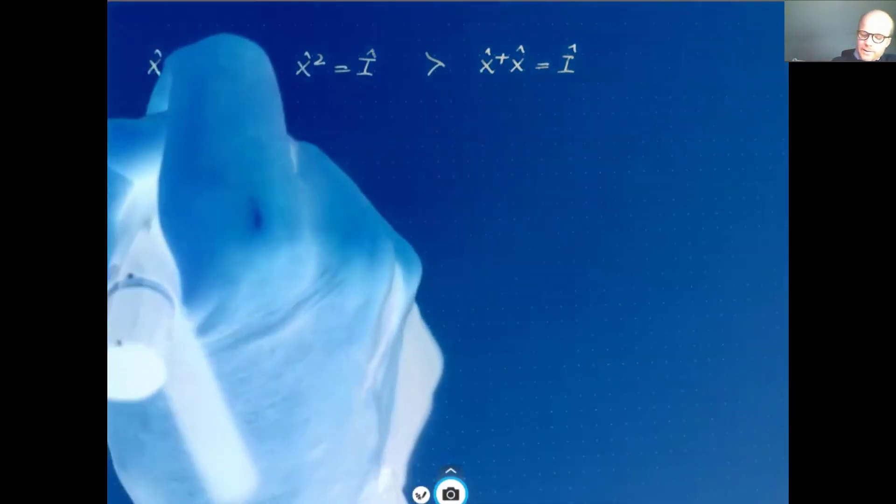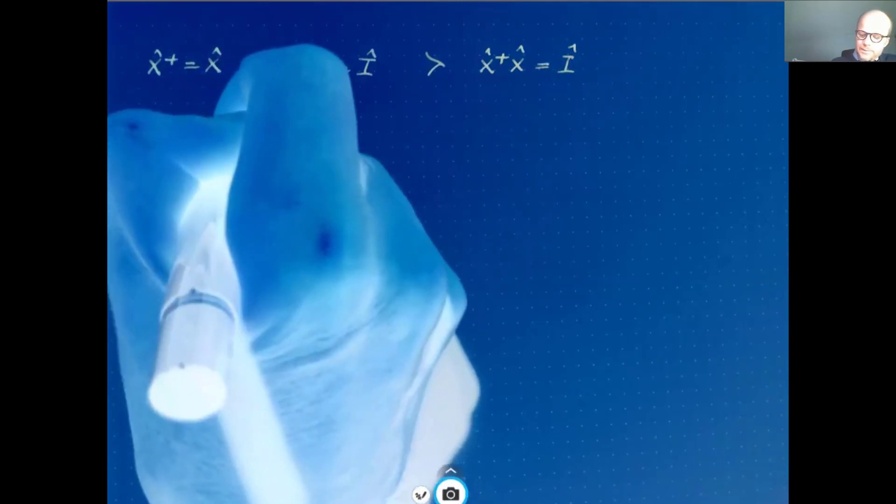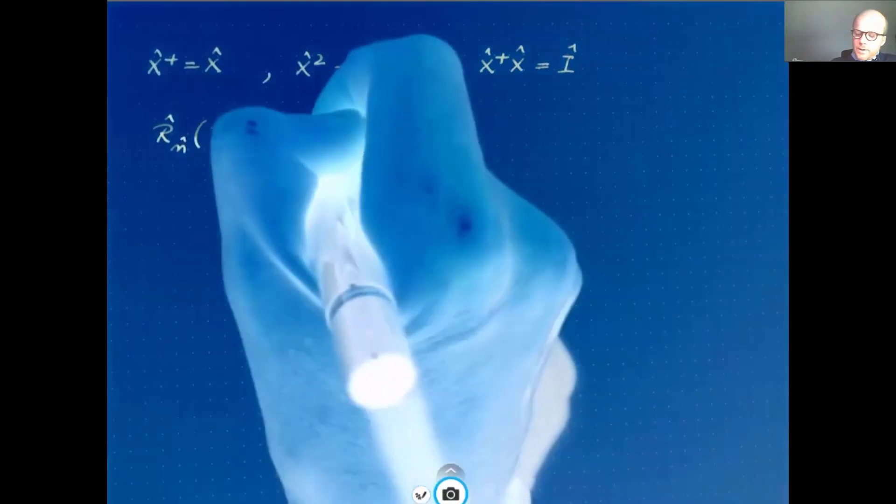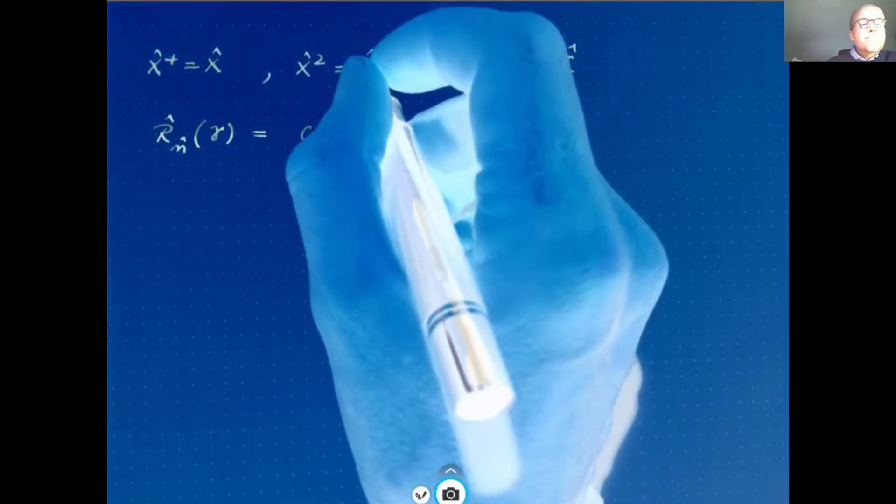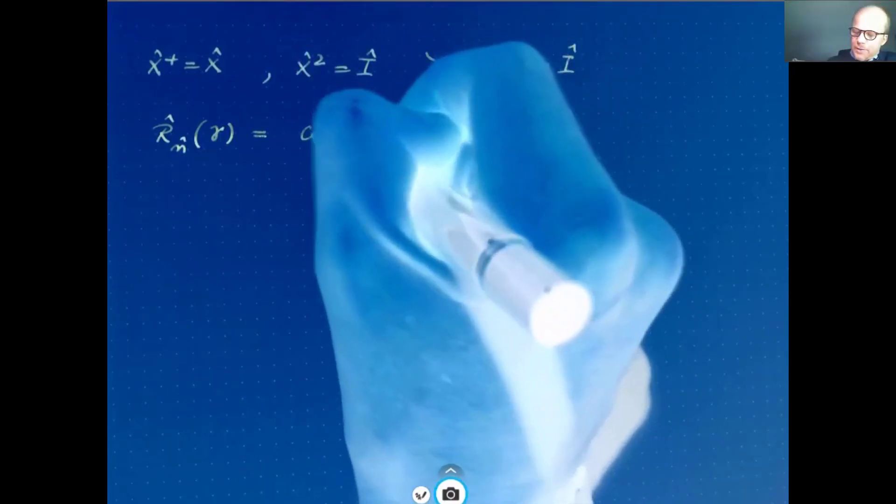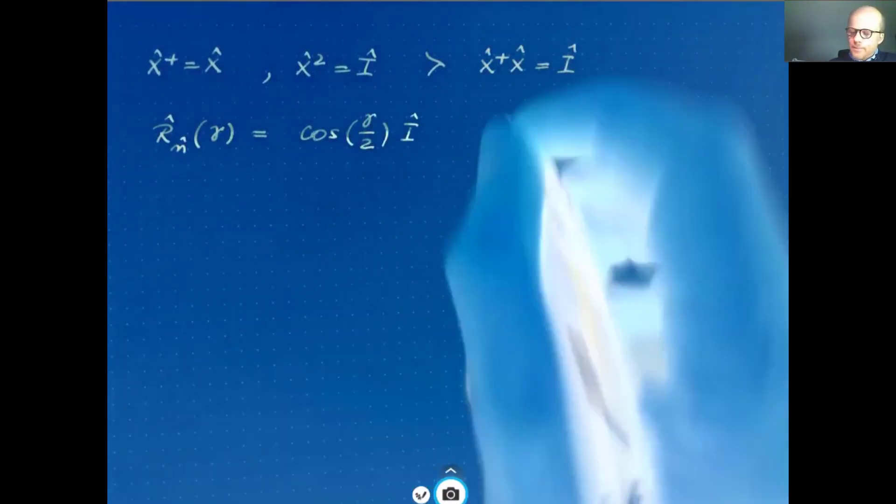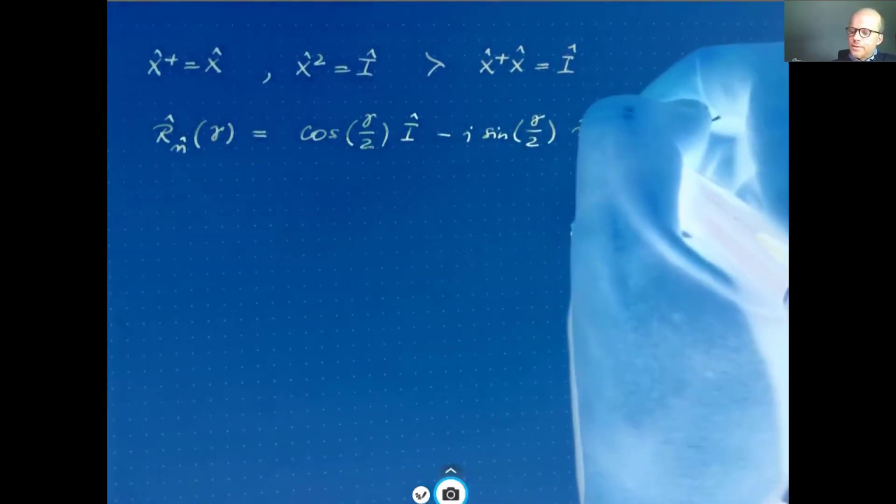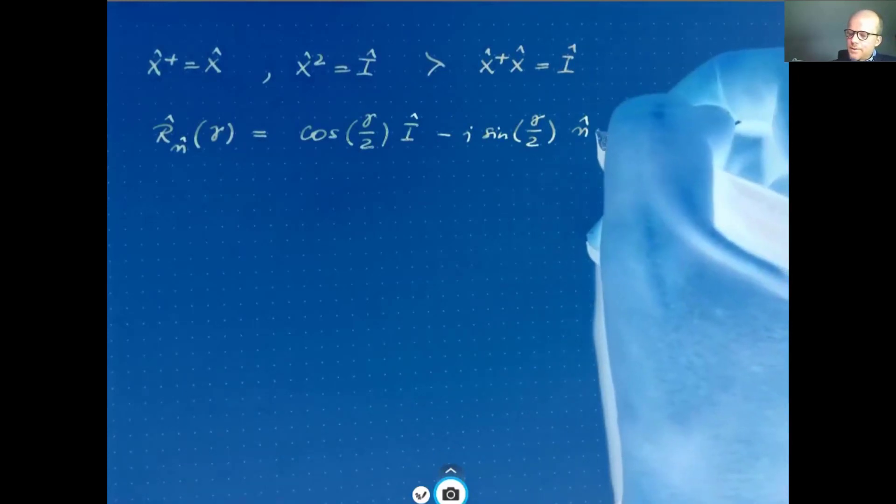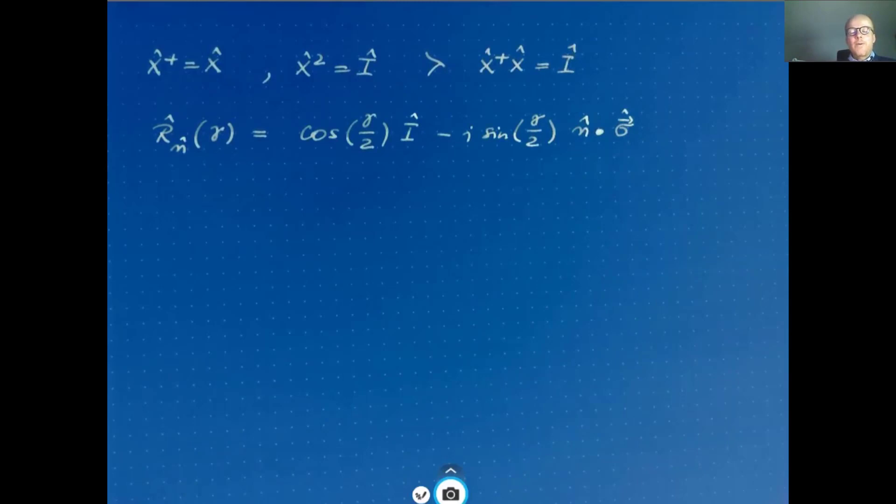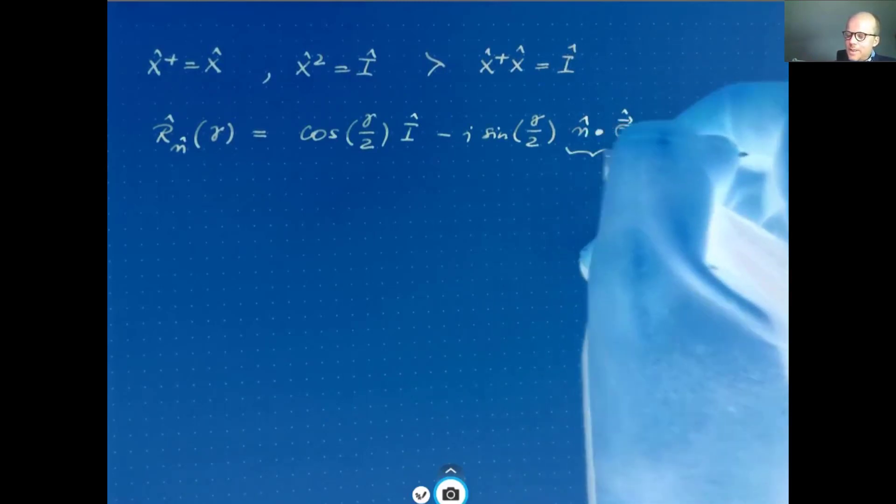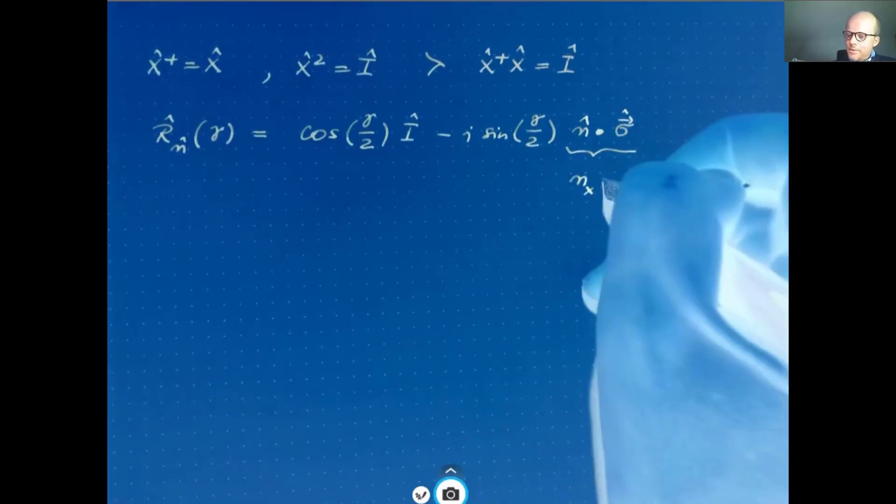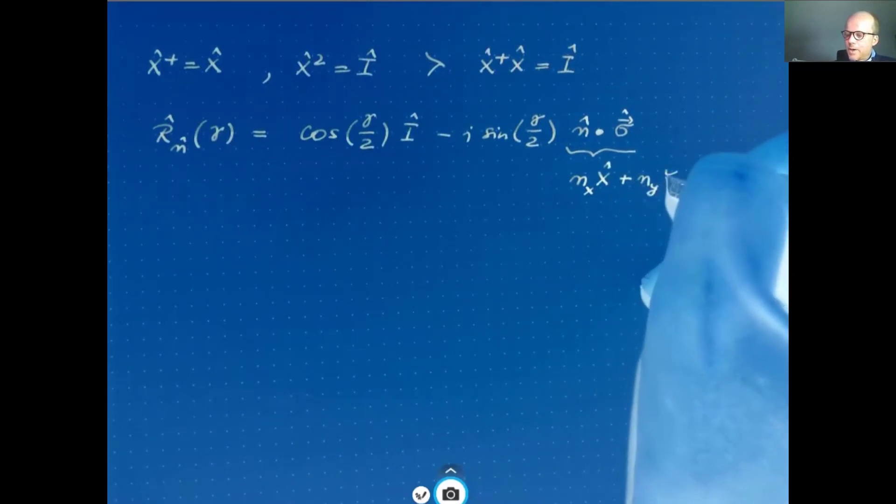Now, remember that this rotation operator had the form cosine of gamma half times the unit operator minus i sine of gamma half. And then we have this unit three-dimensional unit vector n scalar product with this vector of Pauli operators. Now, let me write this explicitly. So this is nx times Pauli x plus ny times Pauli y plus nz times Pauli z.